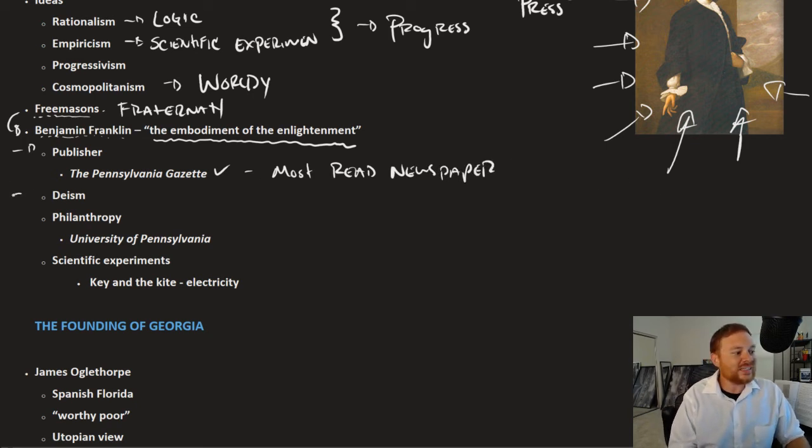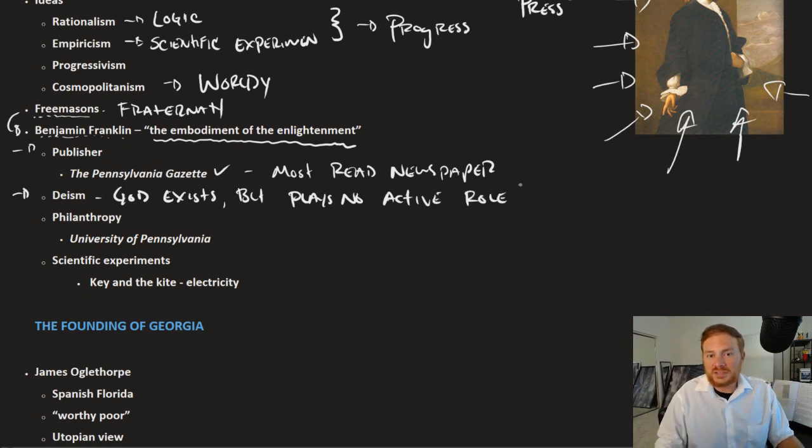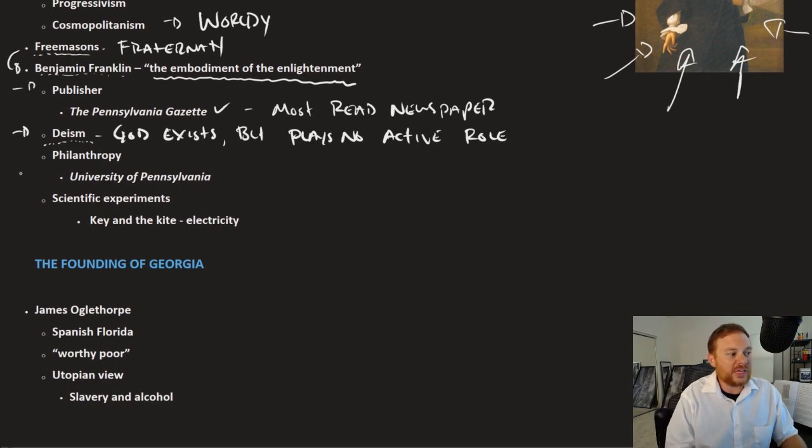He believed in deism, which is that God exists but plays no active role. That the principles of science, the laws of science, those could not be interrupted by any sort of divine force. A lot of Enlightenment thinkers subscribe to this ideology that God exists but he doesn't do anything in the physical world right here.